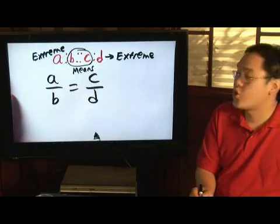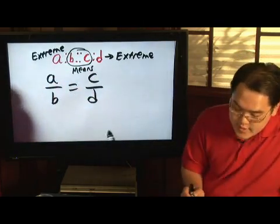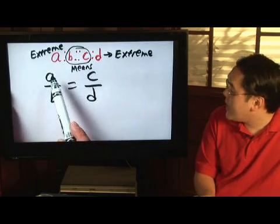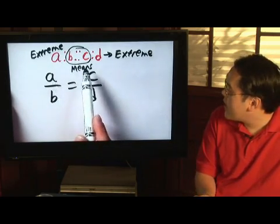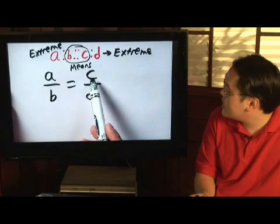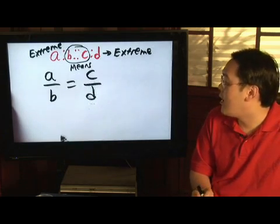Now, to write this in fraction form, A to B, that means A is on top, B is at the bottom, and C to D means C is on top, D is on the bottom.